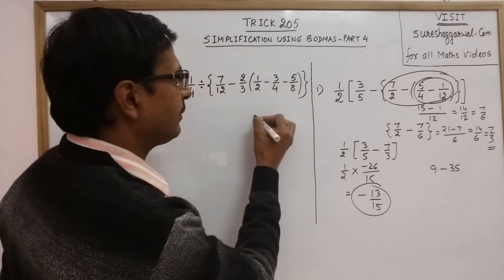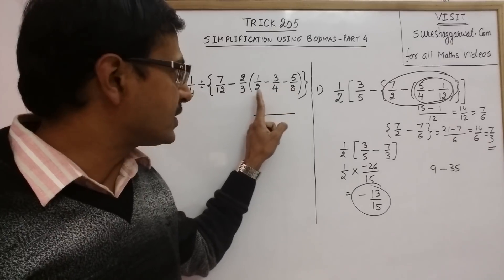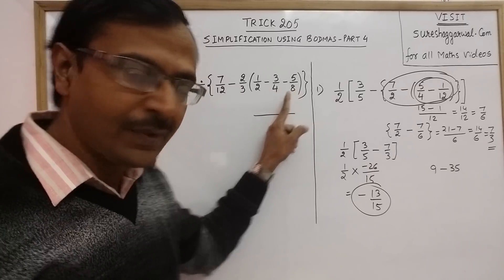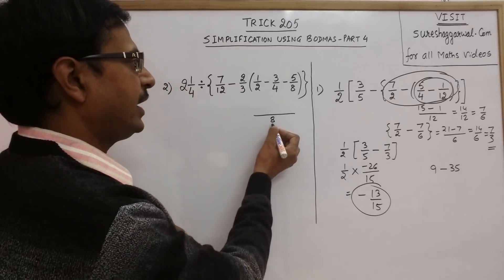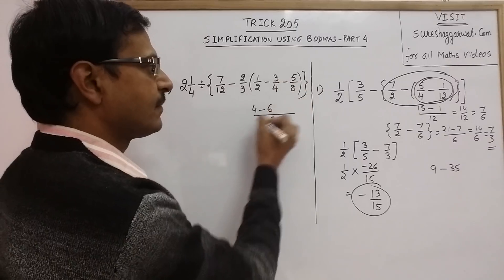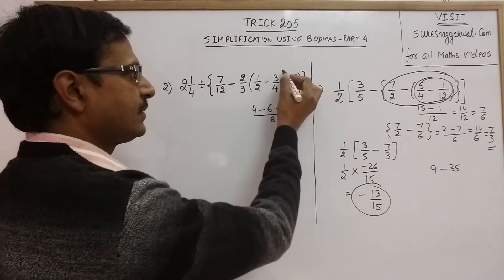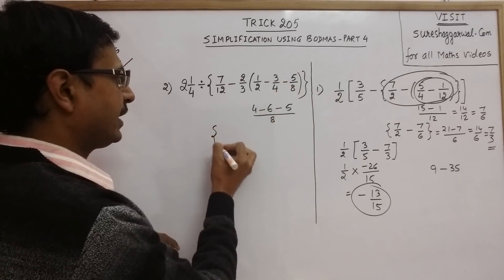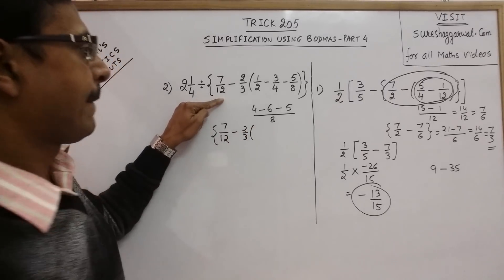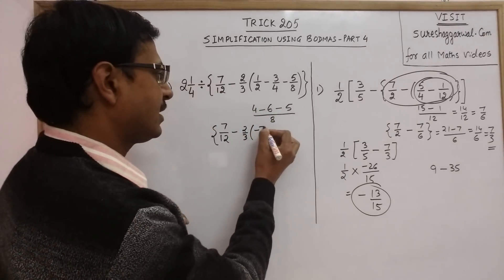We can simplify the three terms together. The denominators are 2, 4, and 8 — since 2 and 4 are factors of 8, the LCM is just 8. So 8 ÷ 2 = 4, 8 ÷ 4 = 2, giving terms with numerators 4×3=12 and 2 and 5. Solving the bracket, our curly bracket becomes 7/12 minus 2/3 times (minus 11 plus 4), that is minus 7/8.